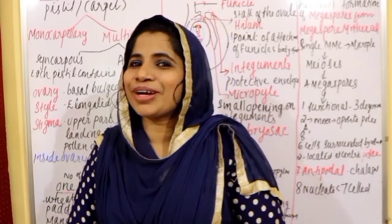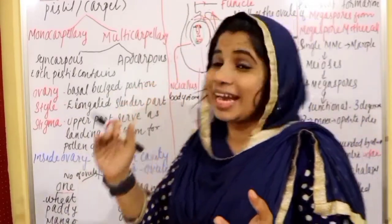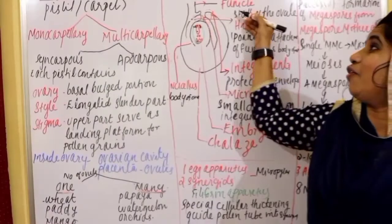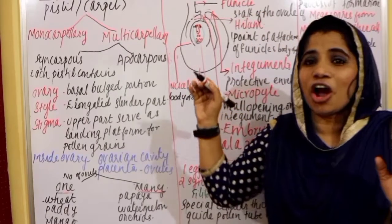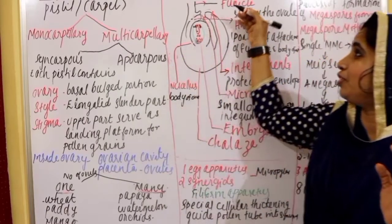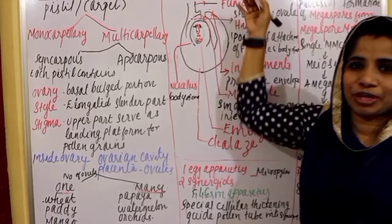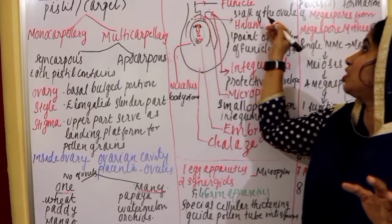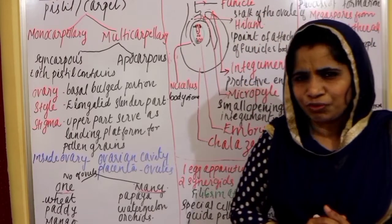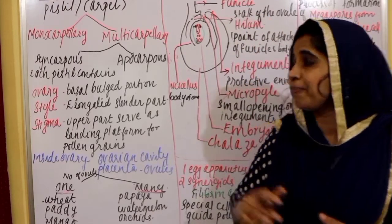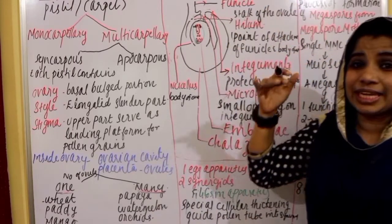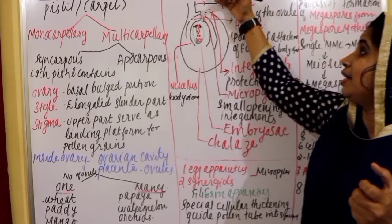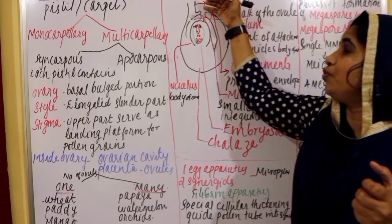So to recap this part of the Gynoecium: the funicle is the stalk of the ovule, and the funicle attaches the body of the ovule to the placenta.